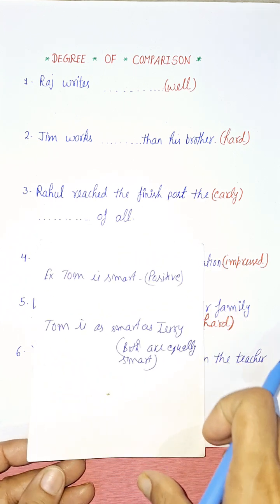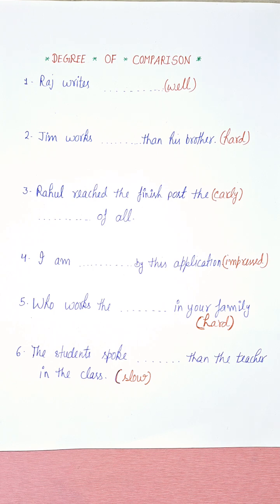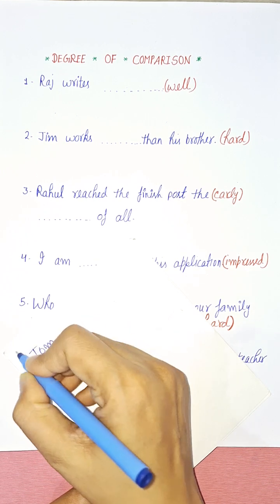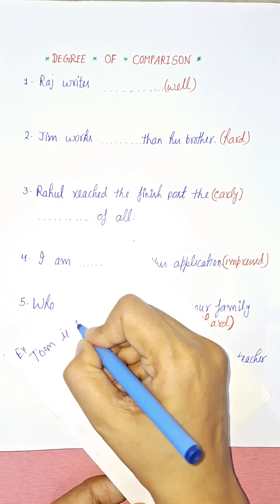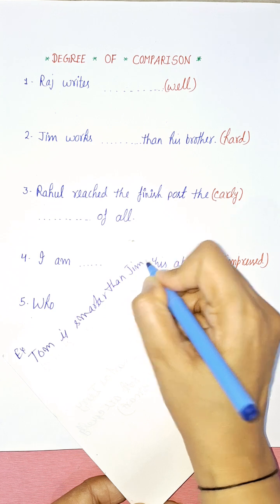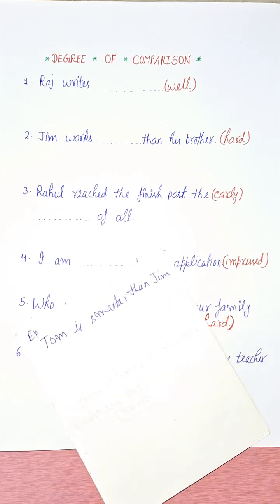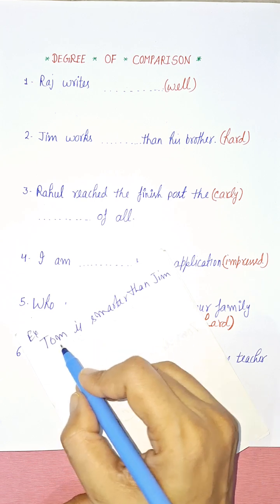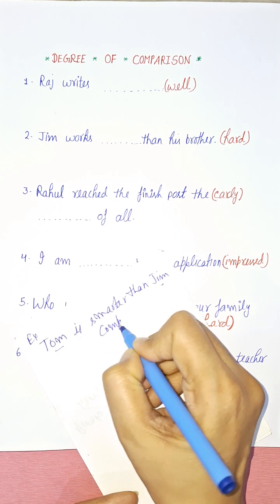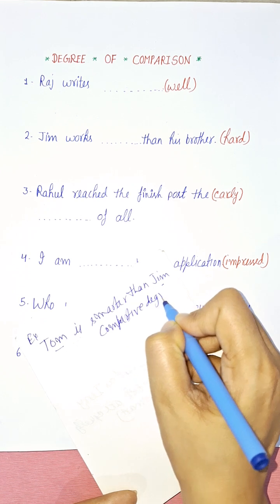Now let's talk about comparative degree. Comparative degree is where we compare two persons, animals, or things. For example, 'Tom is smarter than Jim' — here comparison is being made between two people. So this is your comparative degree.